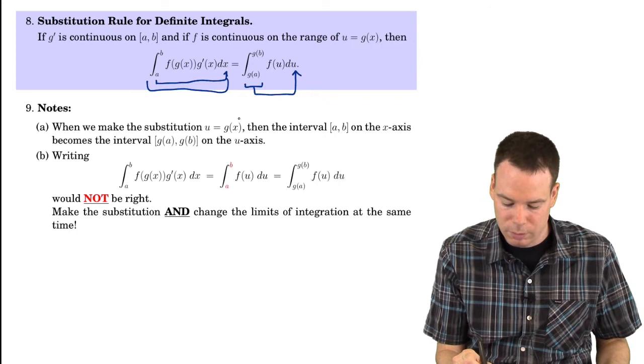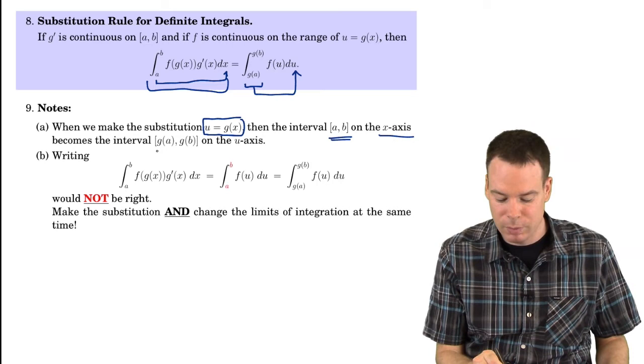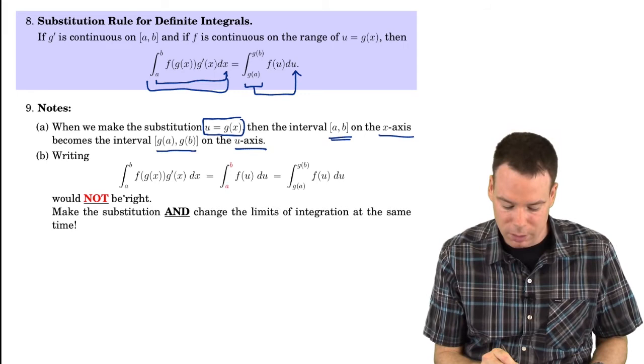So just to point out a few of the key points, when you make the substitution u equals g of x, the original integral, or the original interval, which is on the x-axis, has now become this new interval on the u-axis. And when you're writing this thing in practice and doing your calculations,